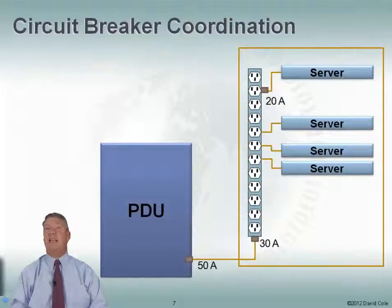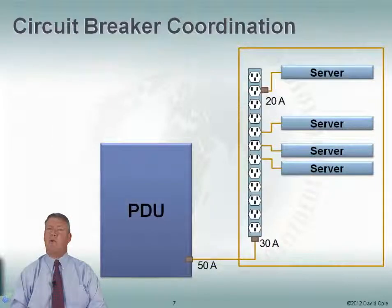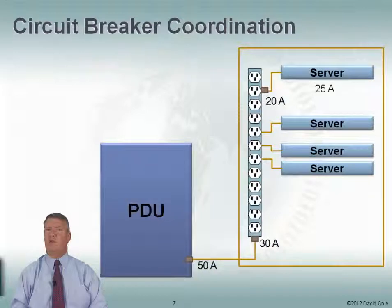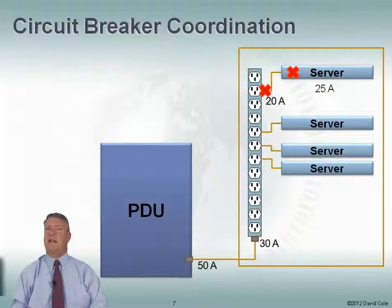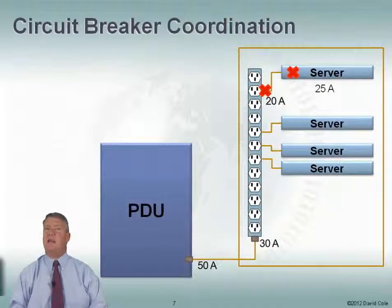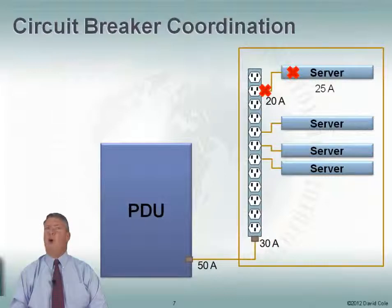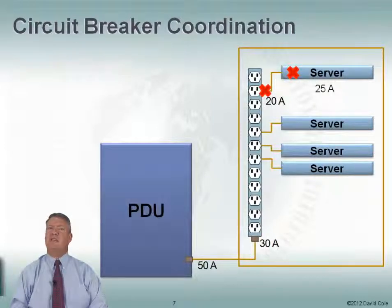Instead, what if we switch these breakers around? If I had a 20-amp breaker at the outlet level and a 30-amp breaker at the rack power strip level, then when a server draws 25 amps, that's the breaker that pops — I lose only that one server. My other servers are blissfully unaware that anything happened. This is much better circuit breaker coordination because we want a blown circuit to happen as close to the equipment as possible, taking down the least amount of equipment.